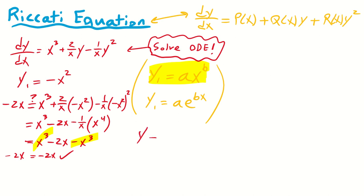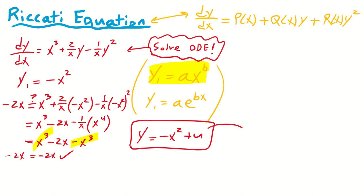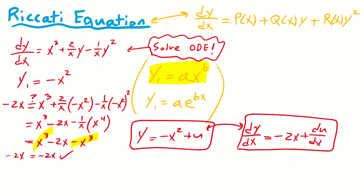So we set y equal to minus x squared plus some unknown u that we'll have to solve. We're going to do that with our substitution. We also need the derivative: dy/dx equals minus 2x plus du/dx. Now we have everything we need to make our substitutions — we have dy/dx, and we have y, which happens to be minus x squared plus u.